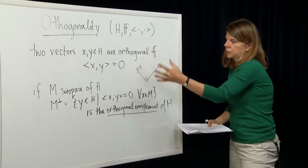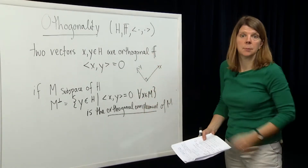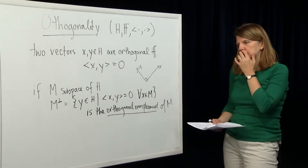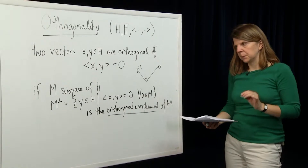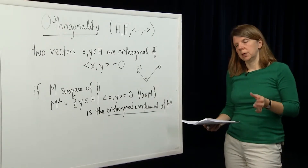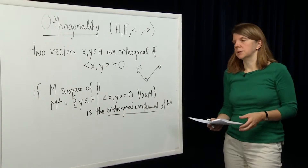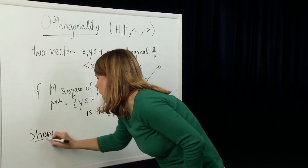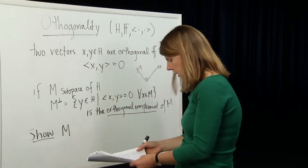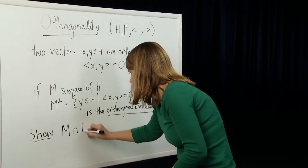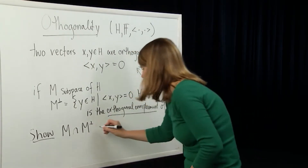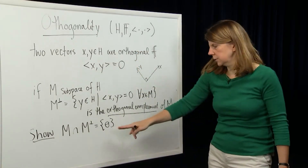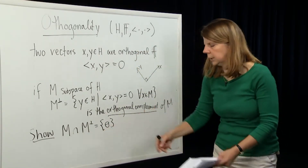We can show, just from this definition, that the only intersection between M and its orthogonal complement is the zero vector. That is, M intersect M perp equals the set containing only the zero vector.